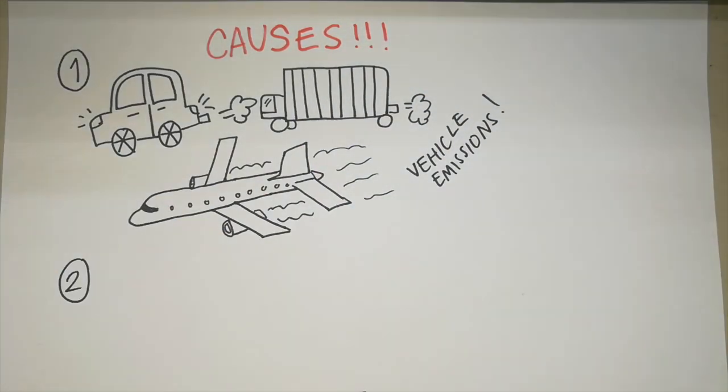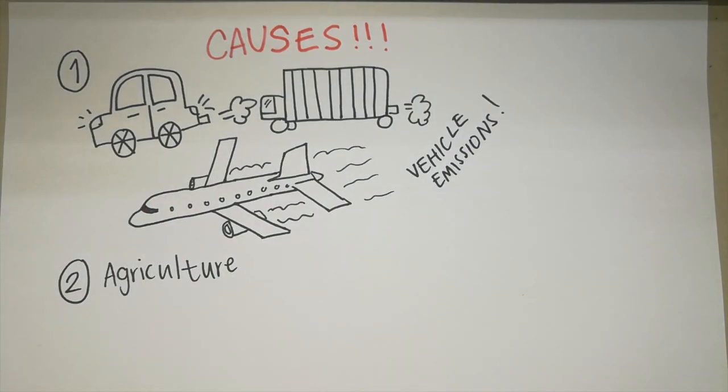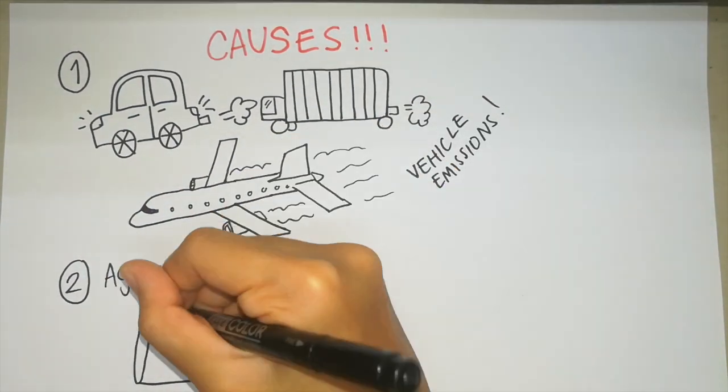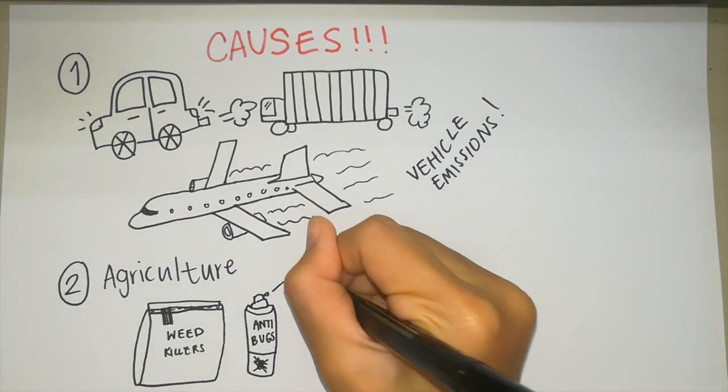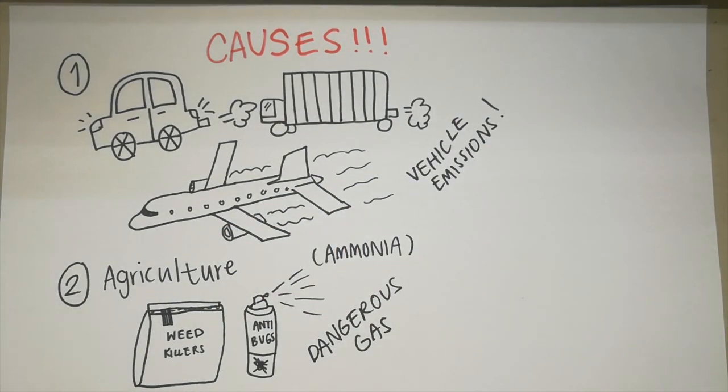Next is agricultural activity. Ammonia, which is a common product from agriculture, is hazardous in the atmosphere. It is used in pesticides, fertilizers, and it emits harmful chemicals into the air.